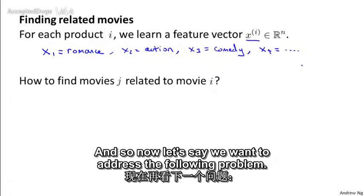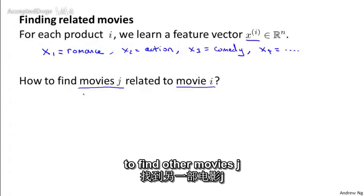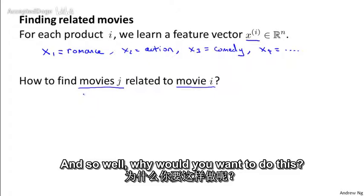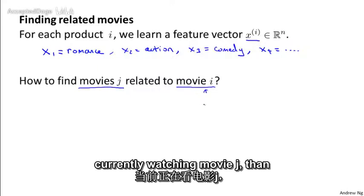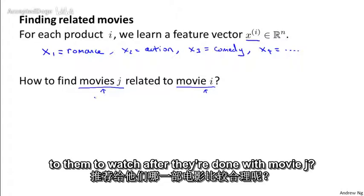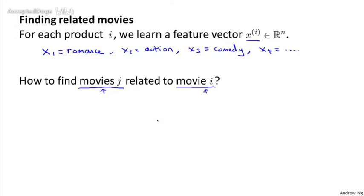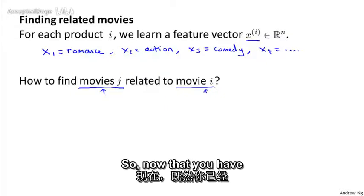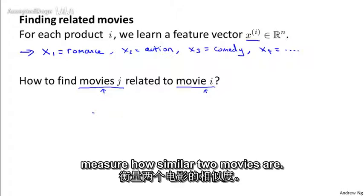Say you have some specific movie i and you want to find other movies j that are related to that movie. And so, well, why would you want to do this? Maybe you have a user that's browsing movies and they're currently watching movie j, then what's a reasonable movie to recommend to them to watch after they're done with movie j? Or if someone's recently purchased movie j, well, what's a different movie that would be reasonable to recommend to them for them to consider purchasing? So now we've learned these feature vectors, this gives us a very convenient way to measure how similar two movies are.